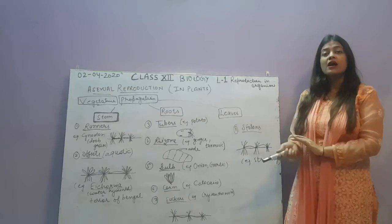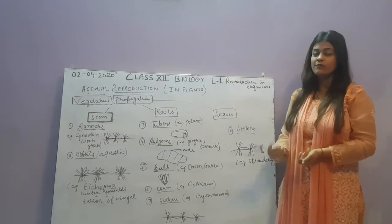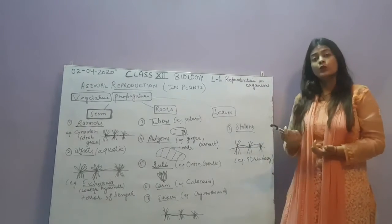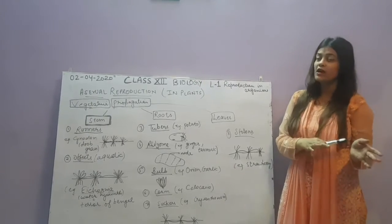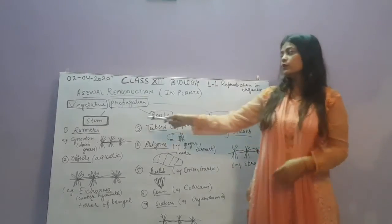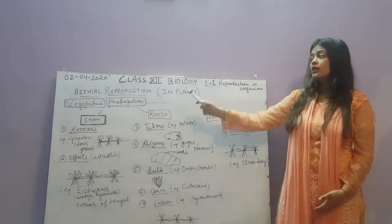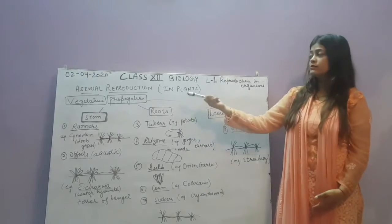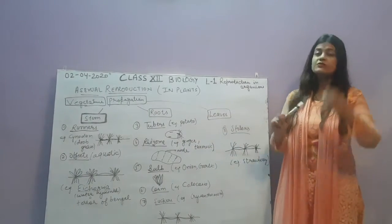Vegetative means the part other than the reproductive part of a plant. The flower is the reproductive part of a plant, so if a new plant grows from a part other than the flower, it is called vegetative propagation. That part is called the vegetative part, and it can include stem, root, or leaf. We will take up each one by one, starting with stem.